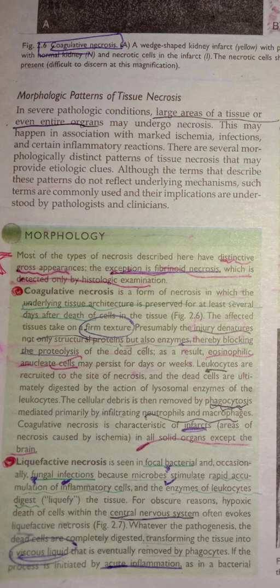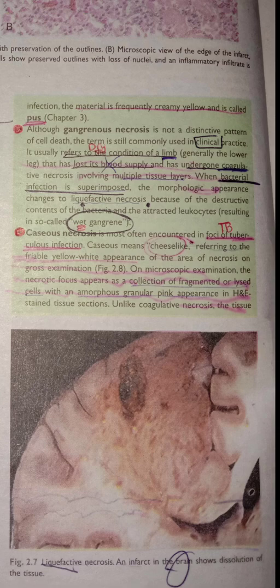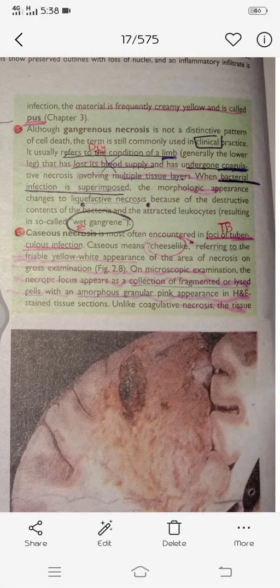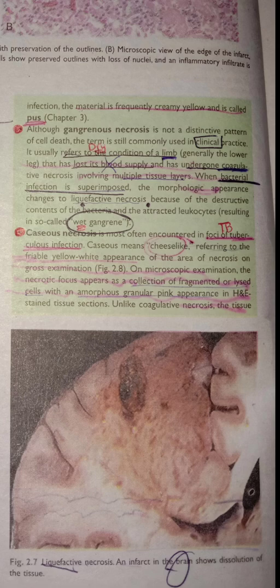Liquefactive necrosis: as the word says, there is liquid — which can be pus. Pus forms when there is bacterial or fungal infection or inflammatory cells, leading to pus formation in an area. This is liquefactive necrosis. It also occurs in the CNS basically — the brain part shown here with a liquefactive necrosis area. Gangrenous necrosis is of two types: dry and wet. In dry gangrene, there is loss of blood supply — ischemia of a limb — and a whole coagulum forms.